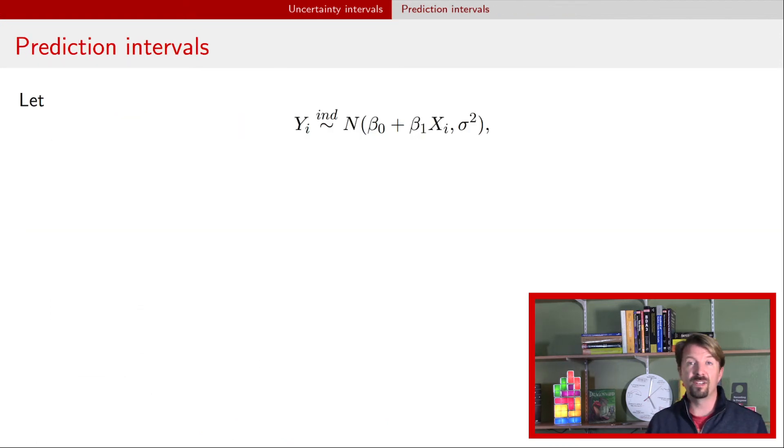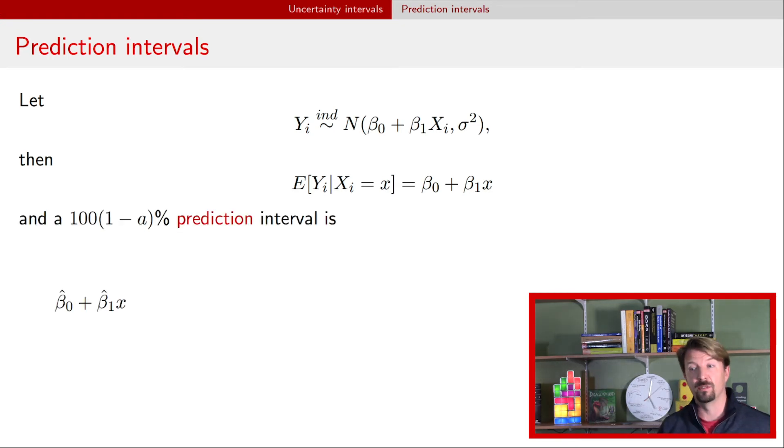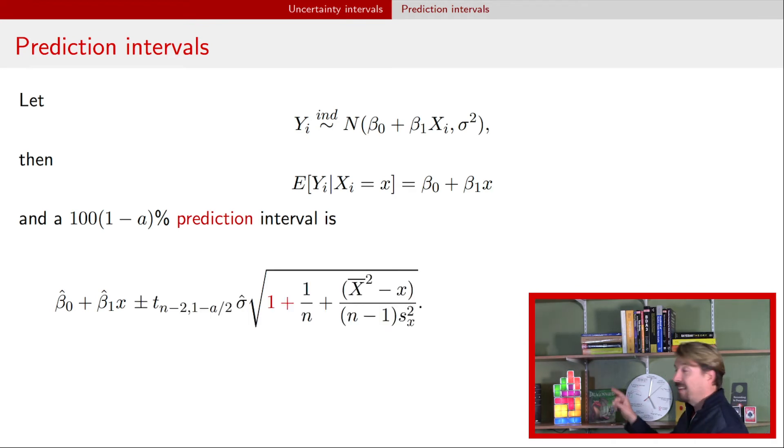If we want to say something about where the data are going to be, then we need something else. Typically, this is called a prediction interval. So we're going to start with the same setup. We have our expected value when x is a particular value little x, and that stays the same, still beta naught plus beta 1 x. But that's only the expected value. It doesn't talk about the variability that we see in the data around that value. There's only one thing that we have to change about the interval. We have to add within this square root sign a plus one. That's the only change that we have to make.